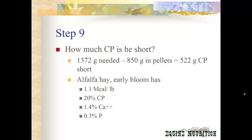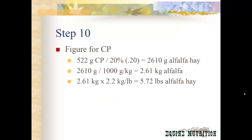According to the table, the alfalfa hay has 1.1 Mcal per pound, 20% protein, 1.4% calcium, and 0.3% phosphorus. To figure for crude protein, we take the 522 grams he's short and divide that by the 20% protein in the hay — and he's going to need 2,610 grams of alfalfa hay. Going backwards to find how many pounds that is: divide 2,610 by 1,000 to get 2.61 kilograms, then multiply by 2.2 kilograms per pound, which equals 5.72 pounds of alfalfa hay.